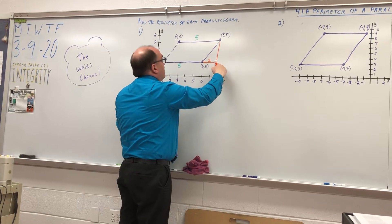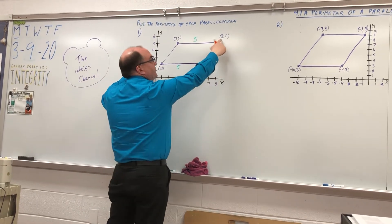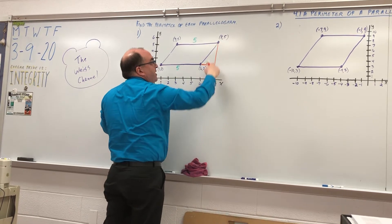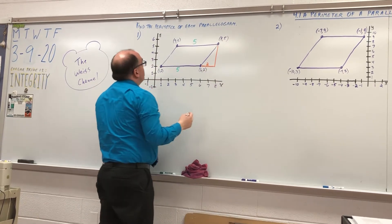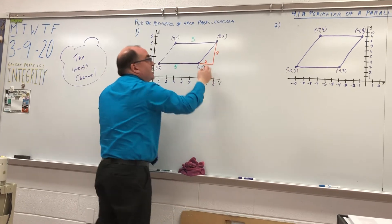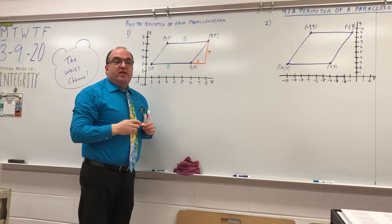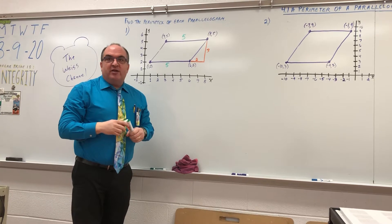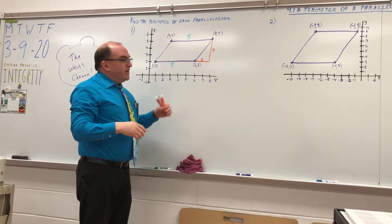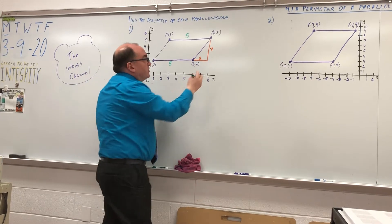And from here to here, if this is 2 and this is 5, what's the length right here? 3, right. So now, how did we find this length? We're going to do the square root. Can you take out your calculators, please?